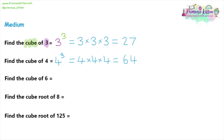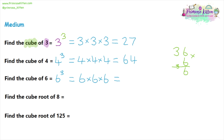Moving on to question three, the cube of six — written as six to the power of three — means three sixes multiplied together. Start one step at a time: six times six is 36. Then we want 36 times six, which is a bit much for mental arithmetic, so let's use a column method. Don't be scared — whenever you get a question you can't do in your head, just use a written method like column multiplication. Units first: six times six is 36, carry three. Then tens: six times three is 18, plus three carried, gives 216.